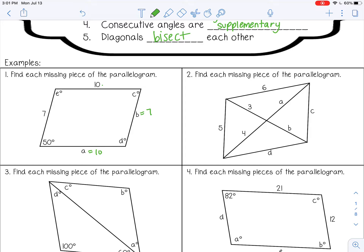We also know that opposite angles are congruent, so 50 degrees and C will be congruent, which means C is 50 degrees. We know consecutive angles are supplementary, so these angles add to equal 180. We can take 180 and subtract 50 to get 130, which means angle E is 130. And because opposite angles are the same, angle D will also equal 130 degrees.